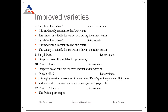Punjab Ratta has a determinate growth habit, is a deep red color variety, and is suitable for processing due to its deep red color. Punjab Upma also has determinate growth habit, deep red color, and is suitable for fresh market as well as processing. Punjab NR7 variety has determinate growth habit and is resistant to root-knot nematode and Fusarium wilt.